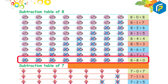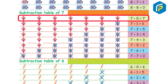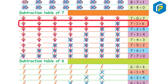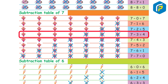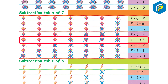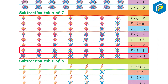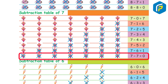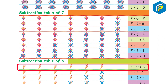Subtraction table of 7: 7 minus 0 is equal to 7. 7 minus 1 is equal to 6. 7 minus 2 is equal to 5. 7 minus 3 is equal to 4. 7 minus 4 is equal to 3. 7 minus 5 is equal to 2. 7 minus 6 is equal to 1. 7 minus 7 is equal to 0.